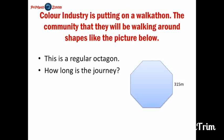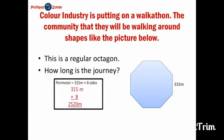Yes, we could add 350 meters 8 times. Or we can do a shortcut like this. We could multiply 315 meters by 8 sides. And that would give us a product of 2520 meters.